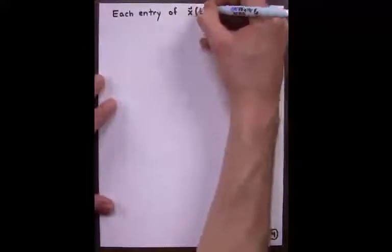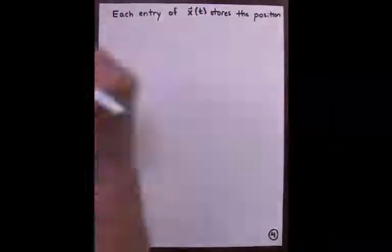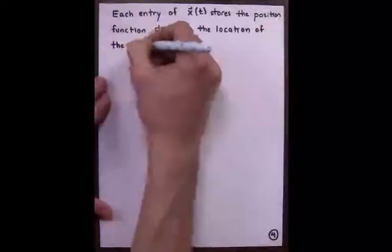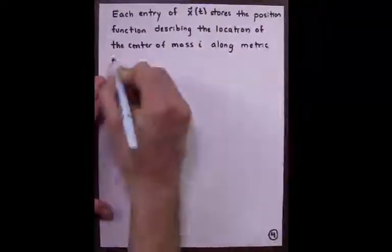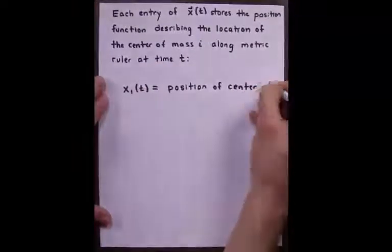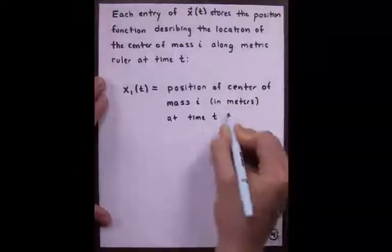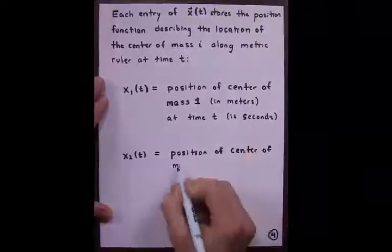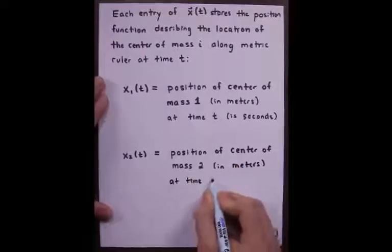Each entry of x of t stores the position function describing the location of the center of mass i along the metric ruler at time t. x1 of t is the position of center of mass one in meters at time t seconds. x2 is the position of the center of mass two in meters at time t seconds.